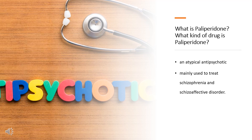What is palliperidone? What class of drug is palliperidone? Palliperidone, sold under the trade name Invega among others, is an atypical antipsychotic. It is mainly used to treat schizophrenia and schizoaffective disorder. It is marketed by Janssen Pharmaceuticals. Palliperidone palmitate is a long-acting injectable formulation of palliperidone palmitoyl ester. It is on the World Health Organization's list of essential medicines.